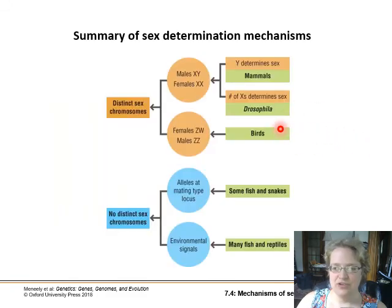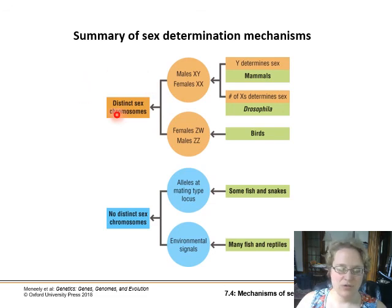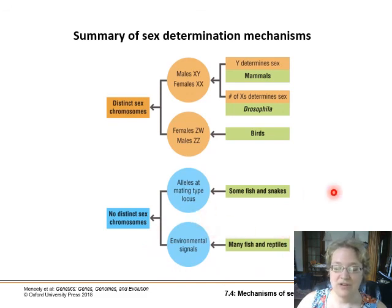To summarize sex determination mechanisms: we have the XY/XX system with male heterogametic, where either the genes on the Y chromosome determine sex or the number of X chromosomes is the determining factor. In birds, females are the heterogametic sex — the ZW/ZZ system. These groups have distinct sex chromosomes. Other groups have no distinct sex chromosomes — sex is determined either by alleles at different genes at a mating type locus, or sex determination is not genetic at all and is based mainly on environmental signals.